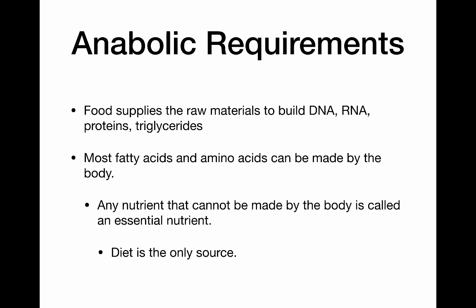The term anabolic means to build. Our food is going to supply us the majority of the raw materials that we need to build all the stuff in our body — the important stuff like our DNA, our RNA, proteins, and triglycerides. Most of our fatty acids and amino acids can actually be made by the body. If there's a nutrient that cannot be synthesized in the body, then that nutrient is called an essential nutrient. In those cases, our diet is the only source of those nutrients.